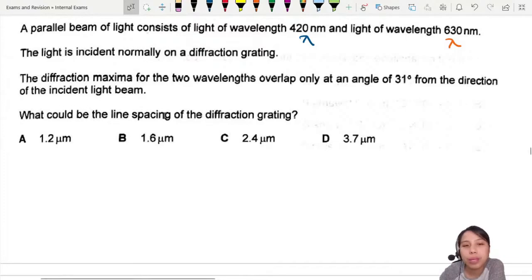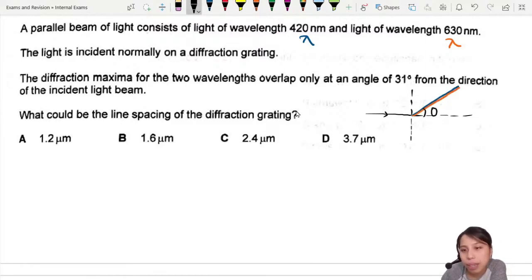From the incident beam, what could be the line spacing? That's an interesting setup. You have a diffraction grating, some incoming light, and then you have a maxima here and another maxima here. They both overlap at the same angle, same theta, but the problem is we don't know what order it is. What n is this? I don't know, they didn't tell me.